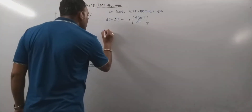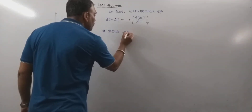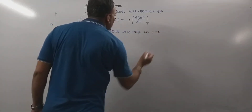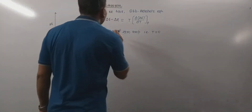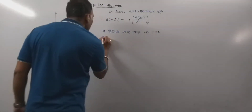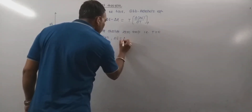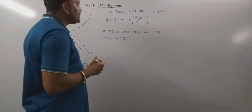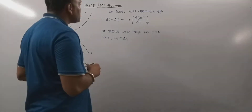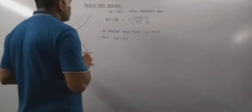At absolute zero temperature — that is when T equals zero Kelvin — this entire term becomes zero. Thus, ΔG and ΔH become equal. When temperature is absolute zero, the free energy change and the enthalpy change are equal.